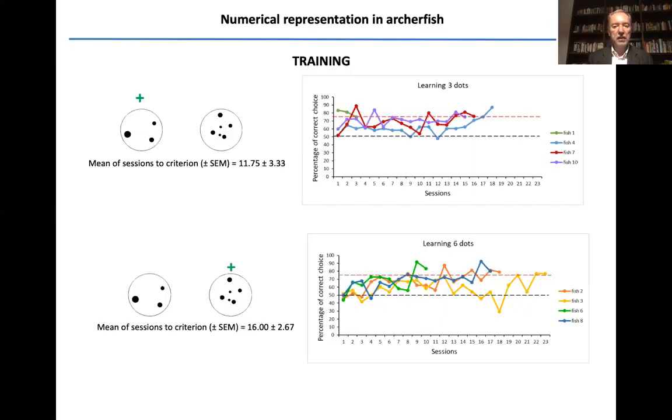So fish learned the task in about 11 sessions on average, and they were trained for this, in this case on three versus six, one half with three as reinforced, positive, or six as reinforced, with continuous changes in the continuous physical variables.